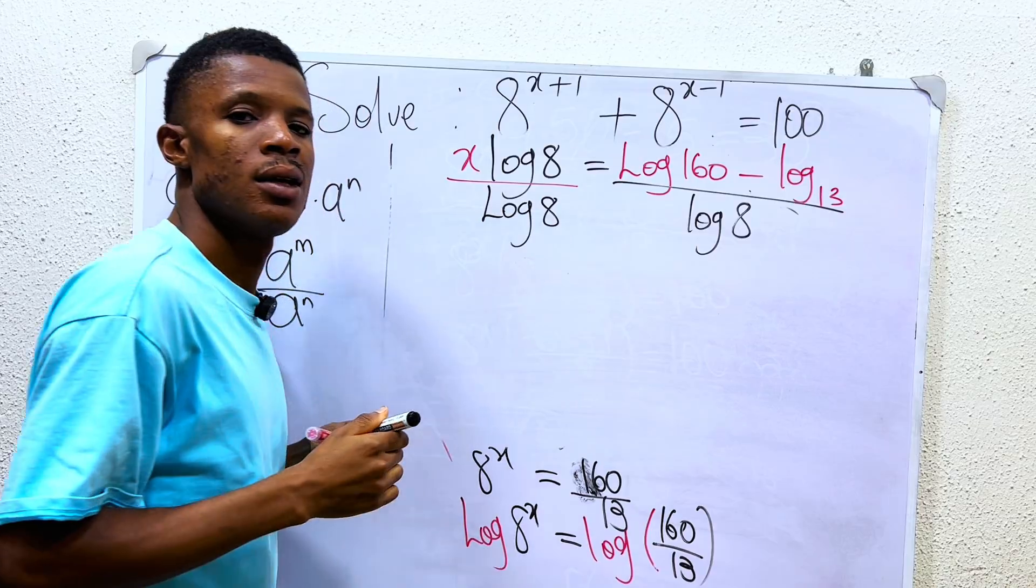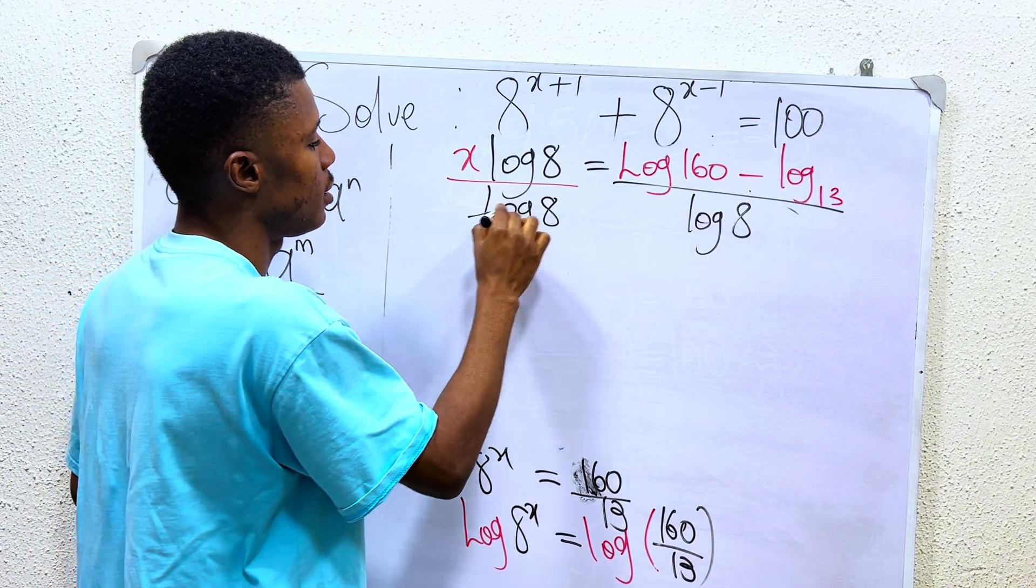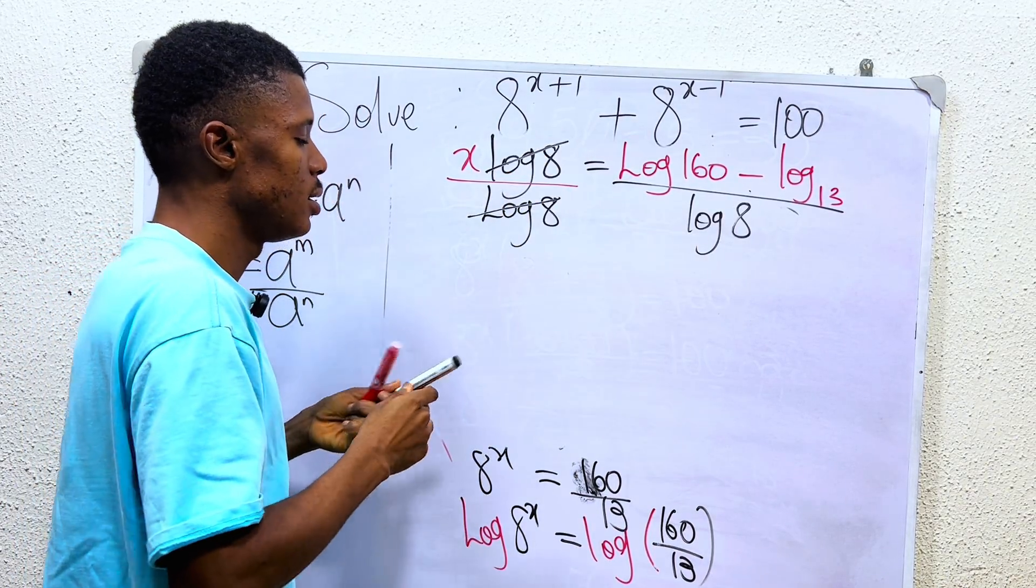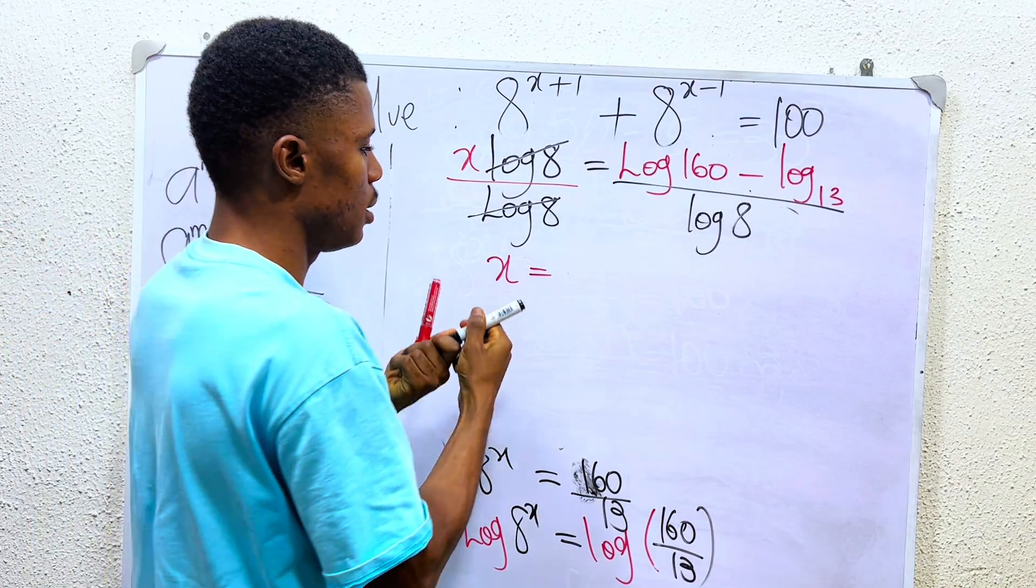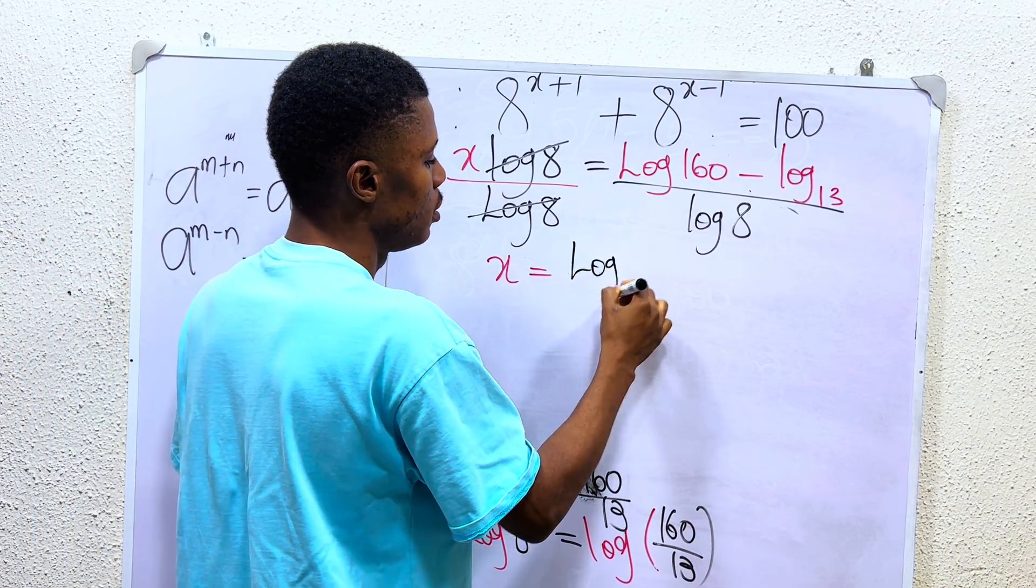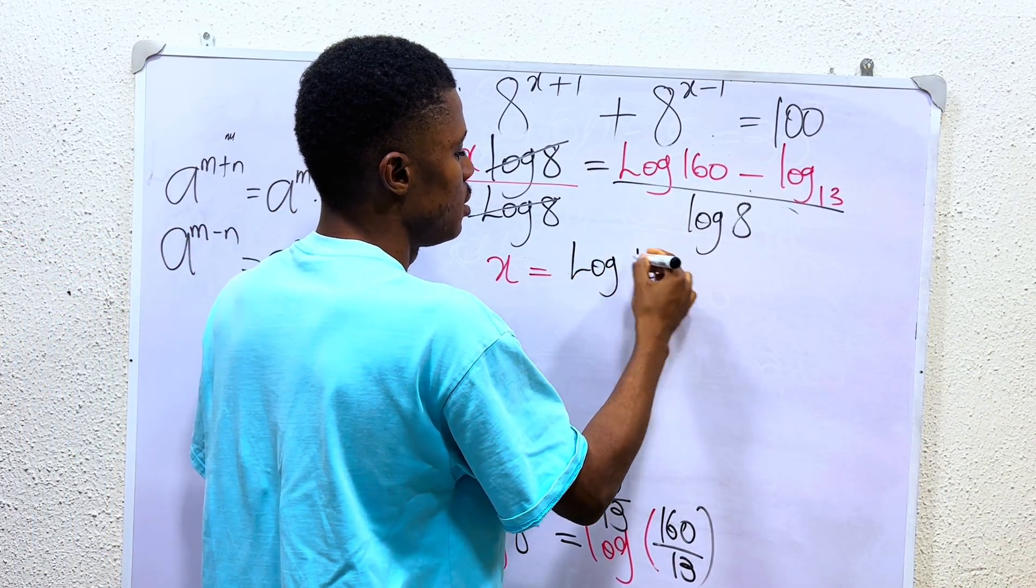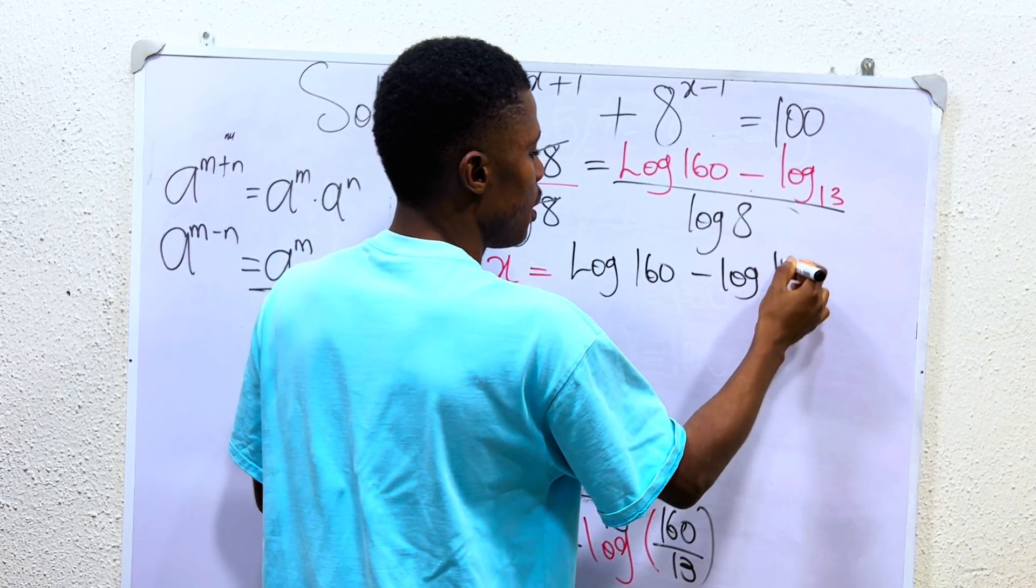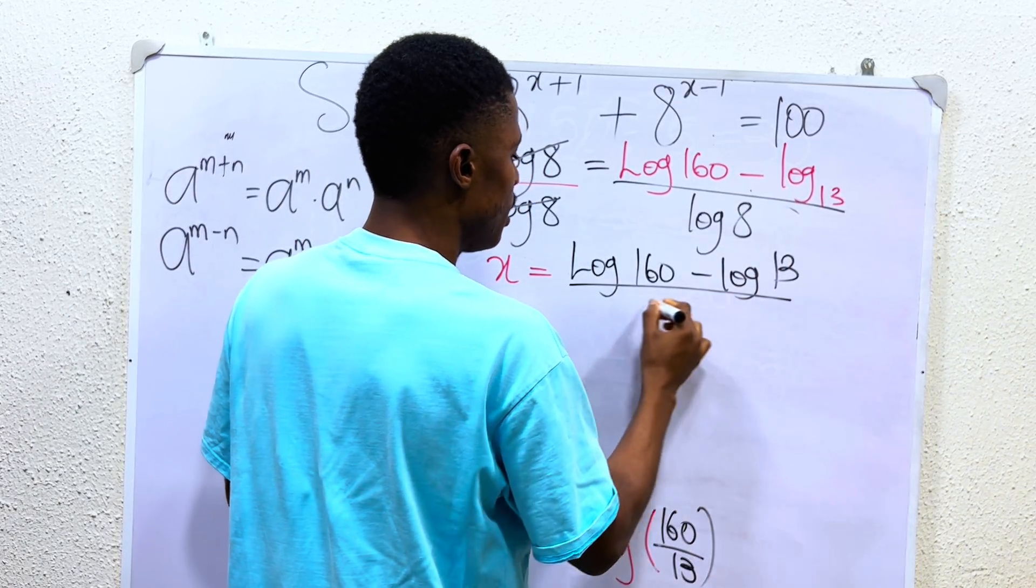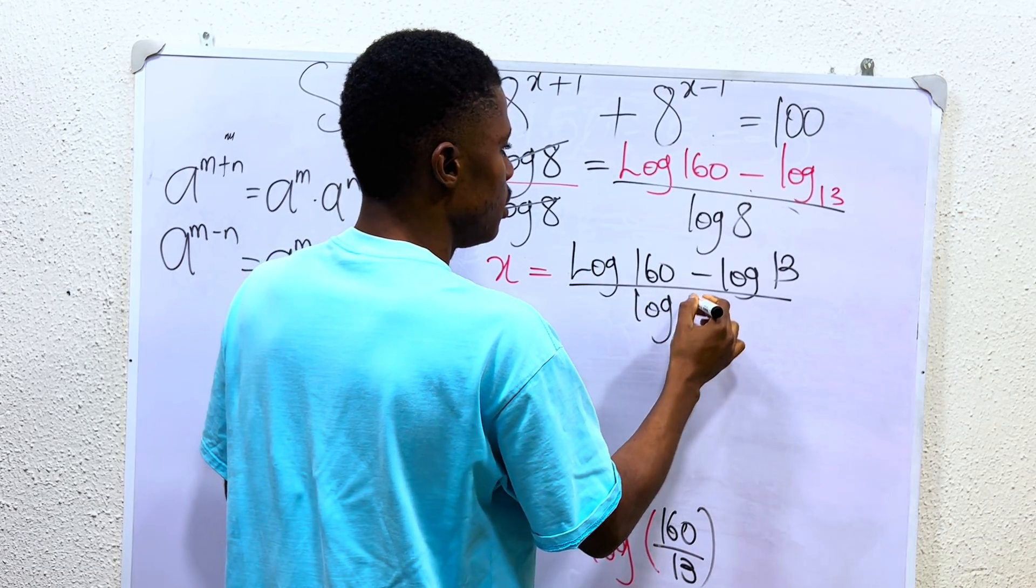So whenever we divide by log 8, log 8 cancels out log 8. We are now having it that x equals log 160 minus log 13 divided by log 8.